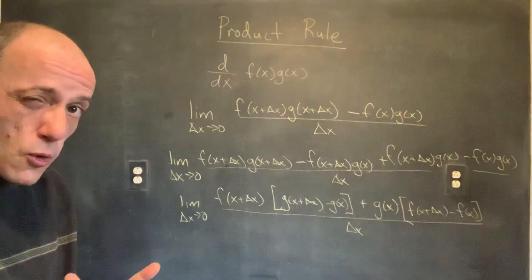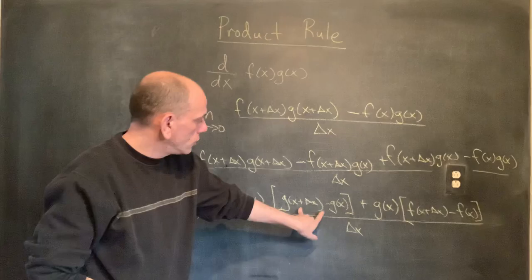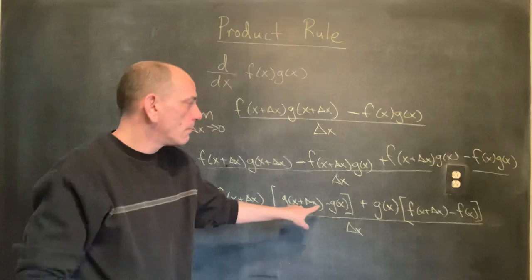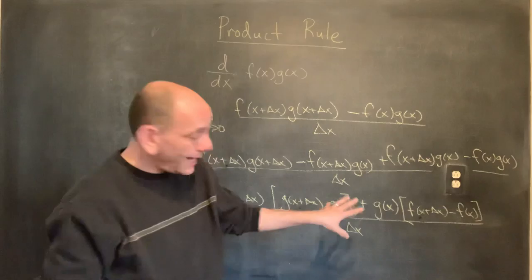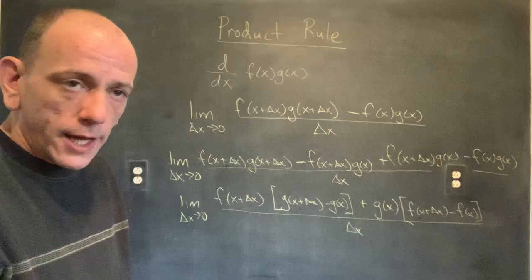Hopefully things should be starting to jump out. This piece — g(x + Δx) minus g(x) over delta x — that looks like the derivative of g. And here, I'm getting f(x + Δx) minus f(x) over delta x — that's looking like the derivative of f.